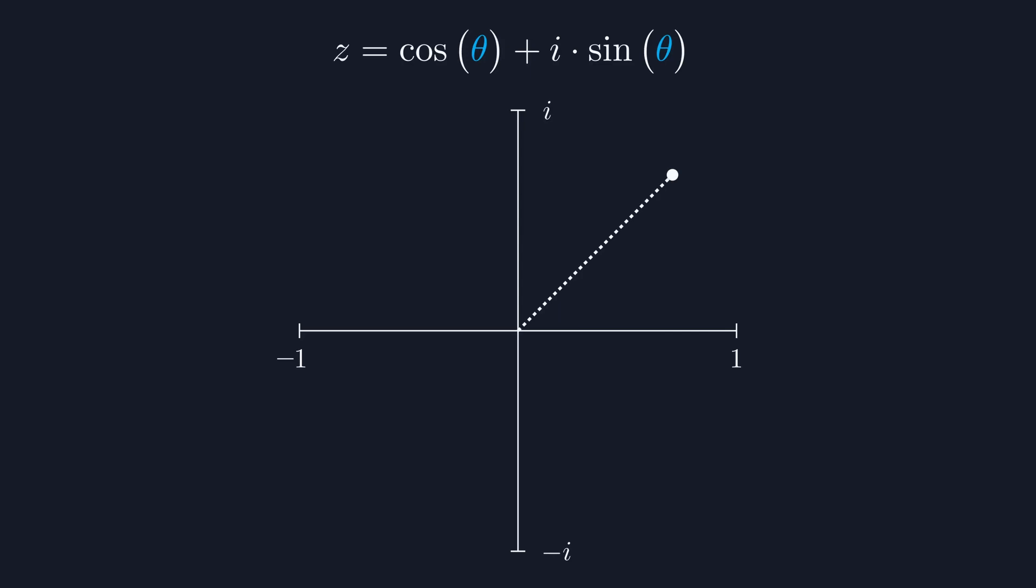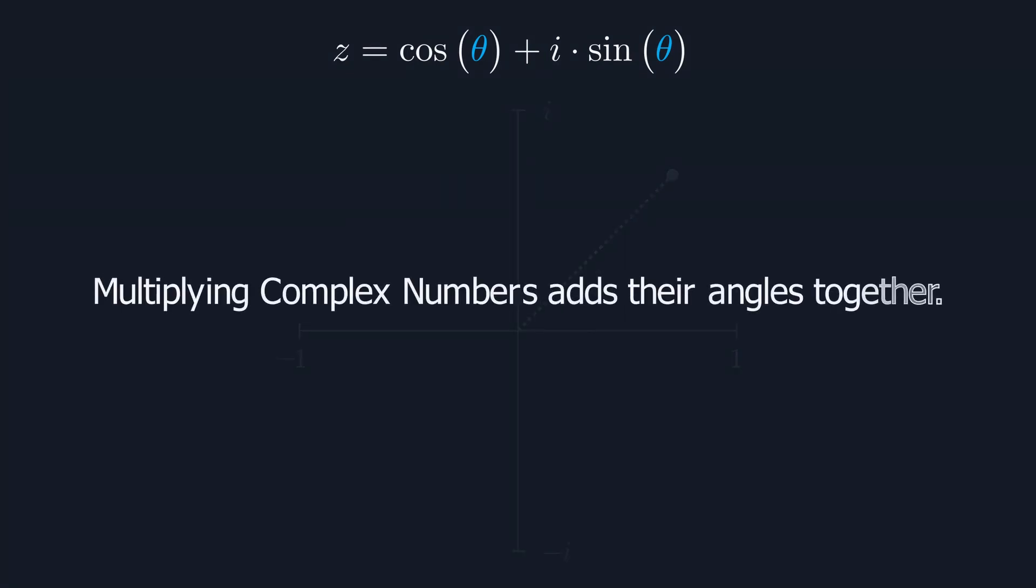The problem with this formula is that it's difficult to use. It's difficult to compute because you need to find both the sine and cosine of a given angle. Further, this formula provides no hints to some of the important properties polar coordinates possess. In particular, the fact that multiplying them together has the effect of adding up their angles. That's why a 90 degree rotation squared equals a 180 degree rotation. Because of this, mathematicians started looking for a shorthand for the polar coordinate formula.